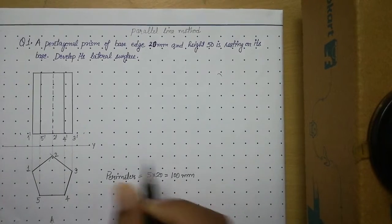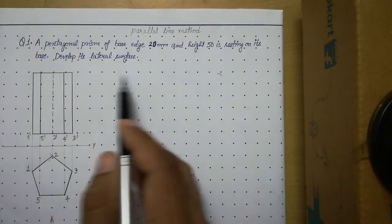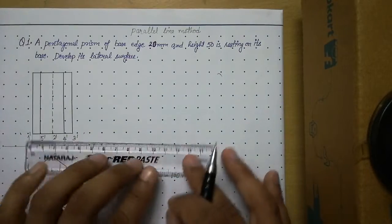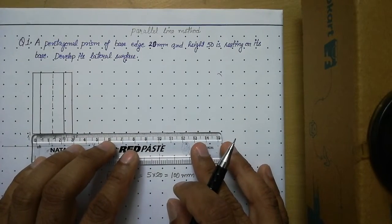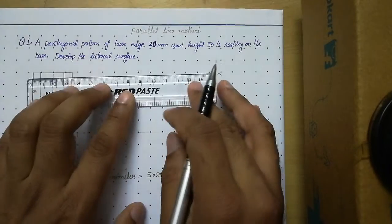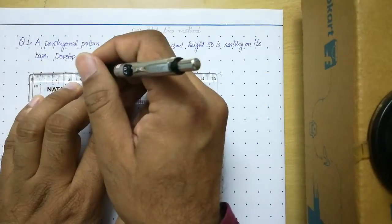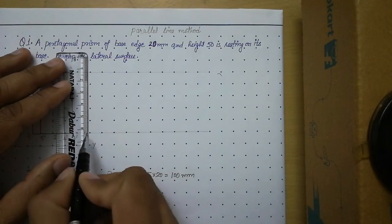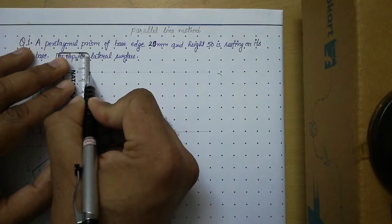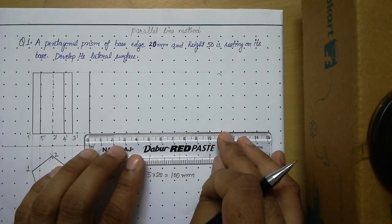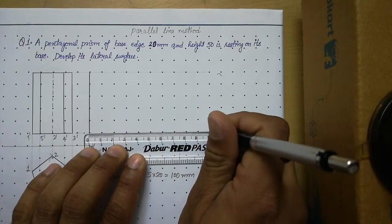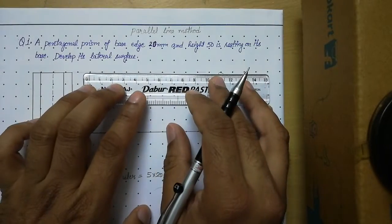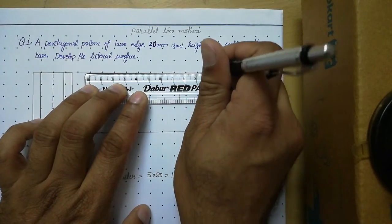Align your scale with the base of the prism and draw a thin projector to the right side. Leave some gap from the front view, then draw a thick line and extend it 100 mm — the total length of the development sheet as calculated from the perimeter. The length should be 100 mm, then join these two points.